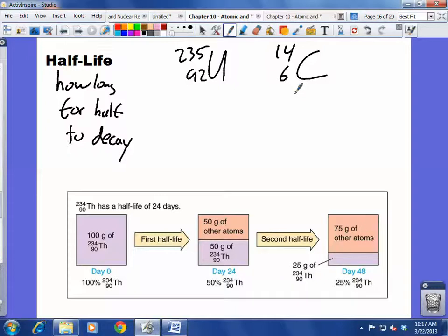Well, the difference here is the half-life. And so your book uses thorium as an example. Remember, thorium was a byproduct of uranium decaying. Thorium has a half-life of 24 days.